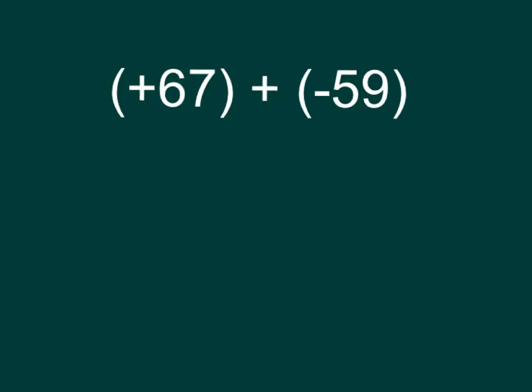One pretty fast way I can do this is to use the zero principle. I know that if I have negative 59 here and I added positive 59, that would equal zero. Now there happens to be enough numbers in 67 to have a positive 59. So look at what I can do. I can figure out, oh okay, if I break 67 down into a positive 59...